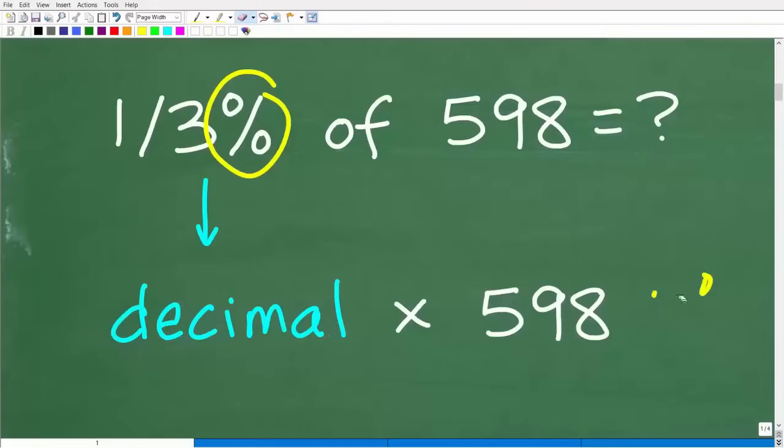Hopefully you understand how to find the percent of a number. But if you're looking at this problem and thinking, I got to change this into a decimal. Remember, this is a fraction of a percent. It's not like 7%, I have one-third. So I'm going to have to think of this as a decimal or as a fraction.